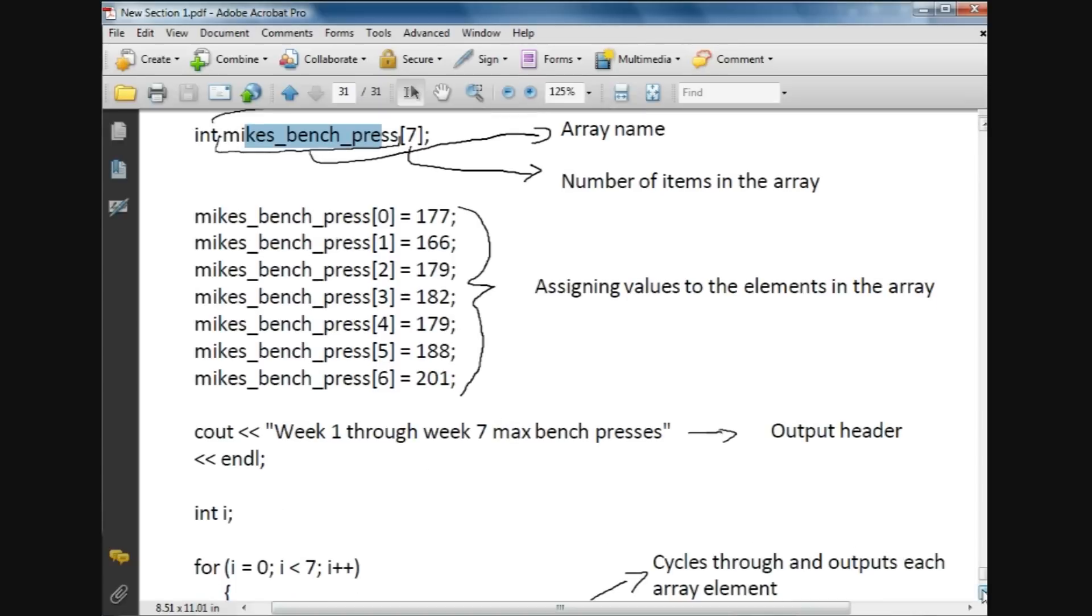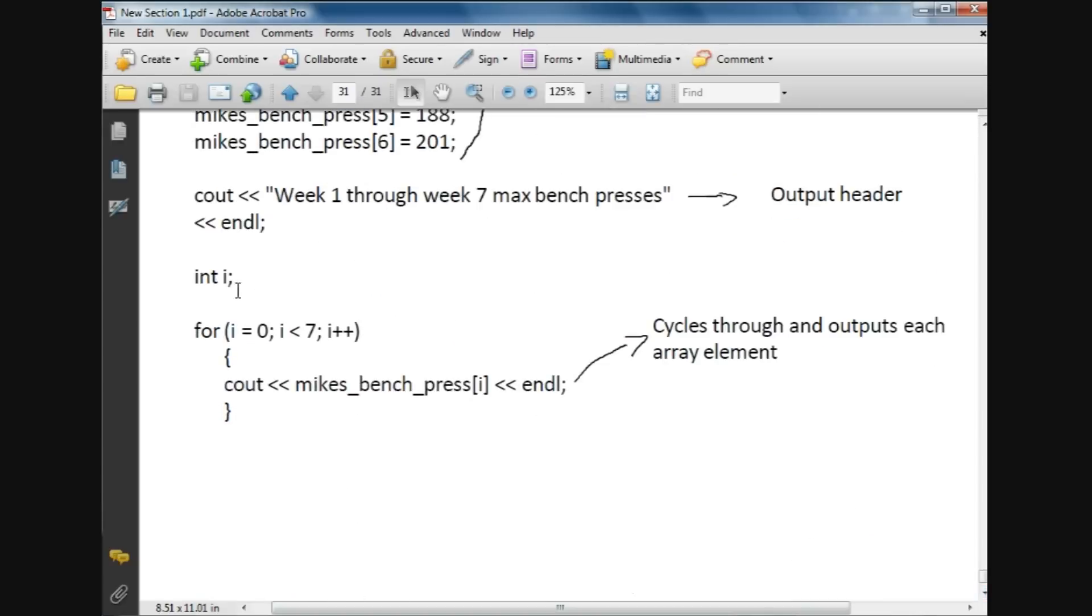What we've done here is for our for loop, we have declared an integer variable and named it i. We haven't assigned it a value at all, and then we're going to use that integer variable i in our for loop.